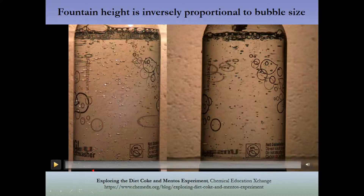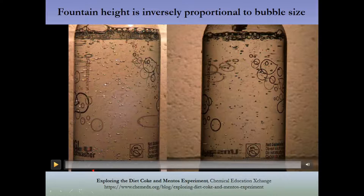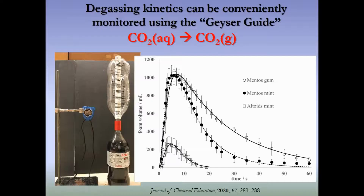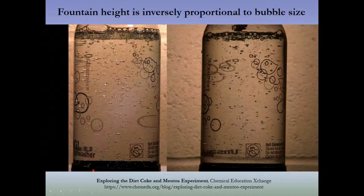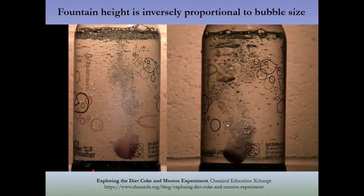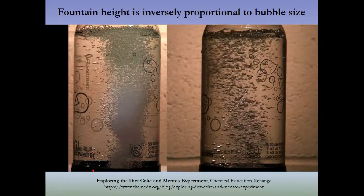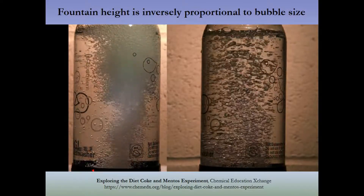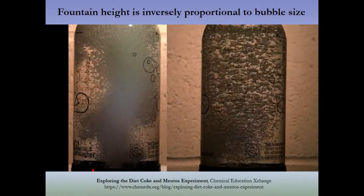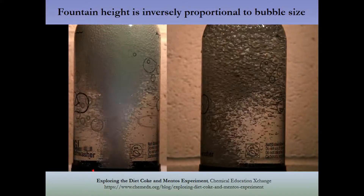Here you can see this in action. On the left is carbonated water to which a little alcohol has been added; on the right is plain carbonated water. We drop one strawberry Mentos into each. You can clearly see the smaller bubbles forming in the carbonated water that contains the additions, with enough rapid bubble formation to start spilling over the side. You do not see the corresponding effect on the right.